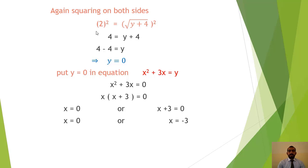Now putting y = 0 back into x²+3x = y: x²+3x = 0. Taking common x: x(x+3) = 0. So x = 0 or x+3 = 0, giving x = 0 or x = −3.